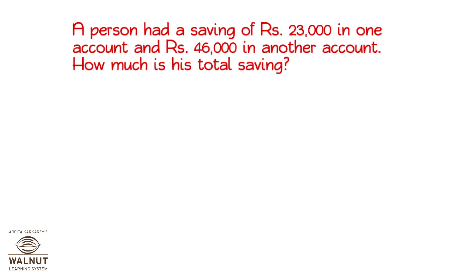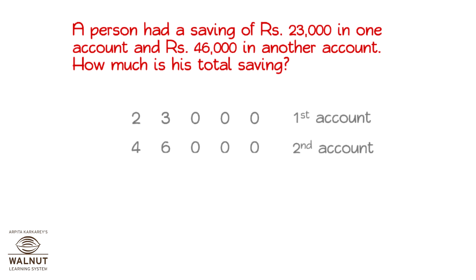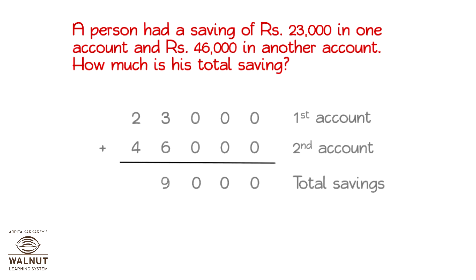A person had a saving of rupees 23,000 in one account and rupees 46,000 in another account. How much is his total saving? We have to find the total savings, which we can get by adding the savings in the first account and the second account. The total savings are rupees 69,000.